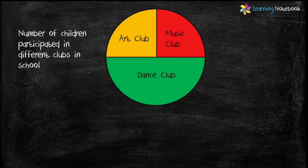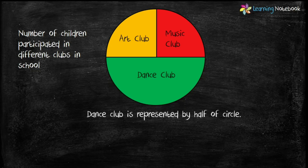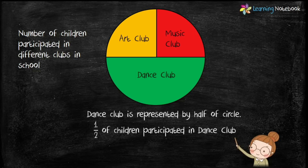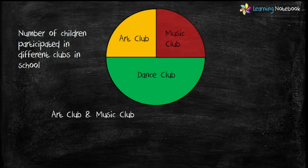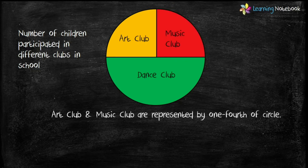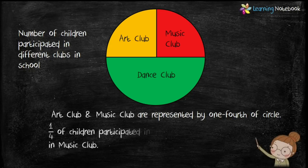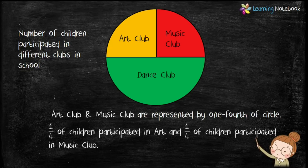Let's learn how to read this pie chart. The dance club is represented by half of the circle, so it means half of the children participated in the dance club. The art club is represented by one-fourth of the circle, and the music club is also represented by one-fourth of the circle, meaning one-fourth of the children participated in each of those clubs.